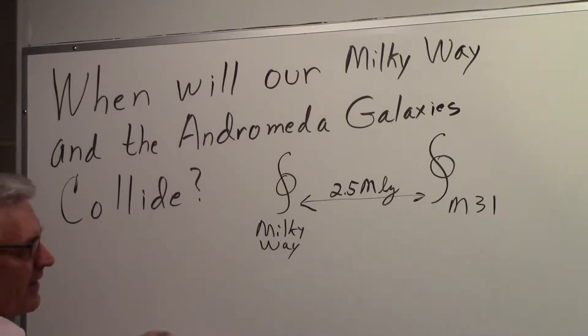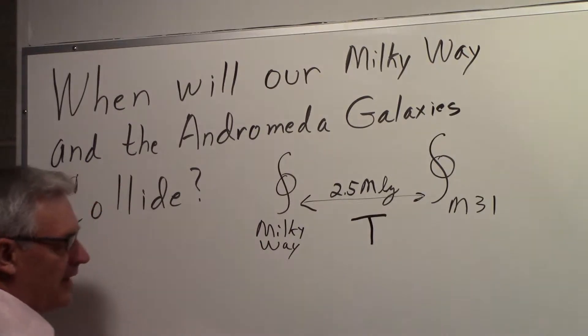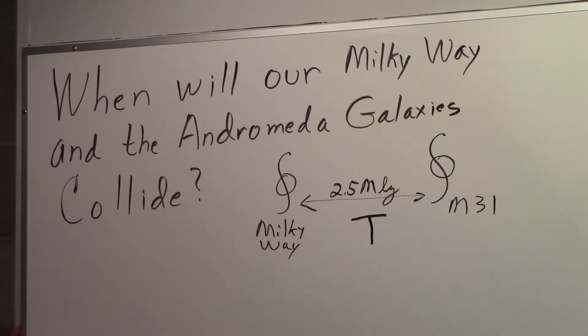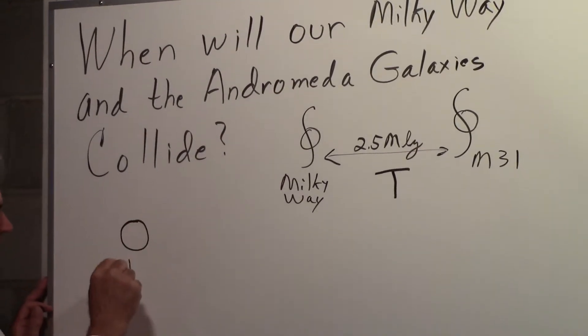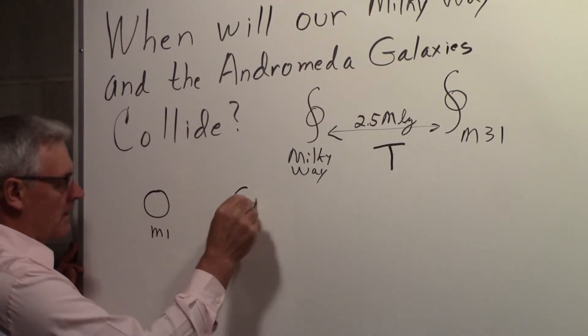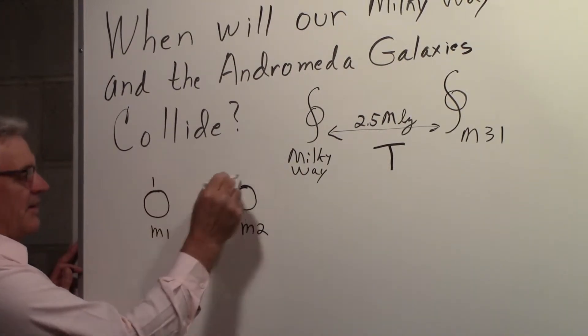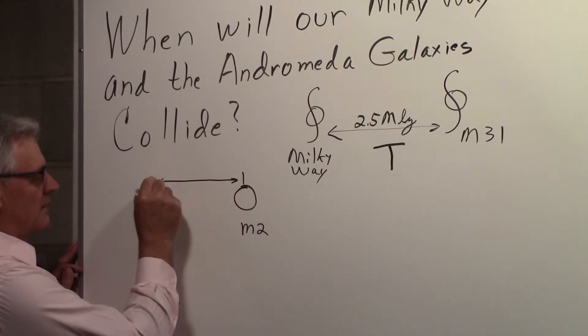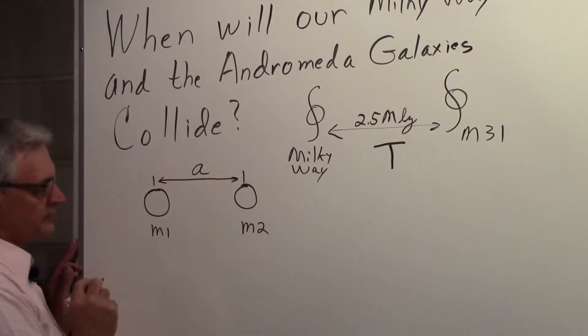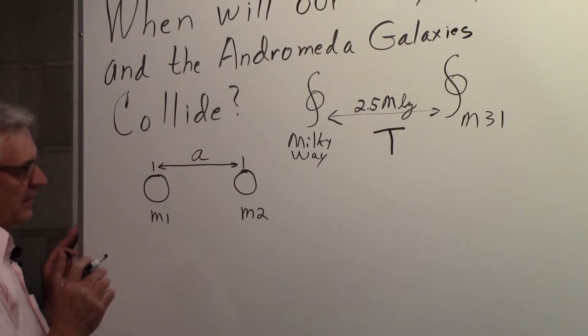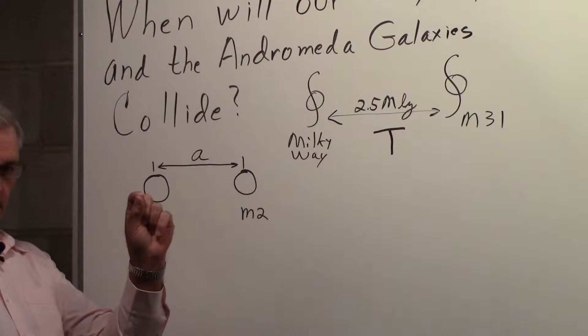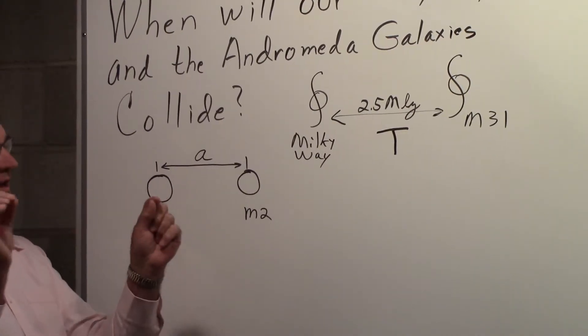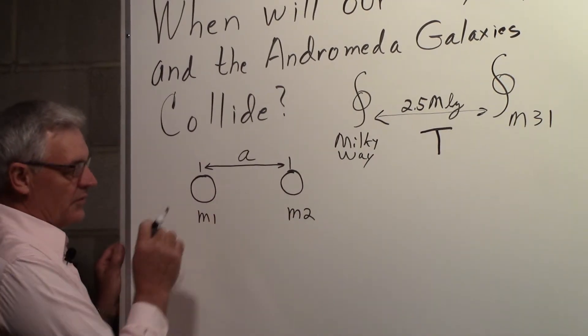We'll denote that time of collision by the letter capital T. To simplify this, we'll consider we have two masses M1 and M2, and they're separated by a distance that we'll call A. We want to find out that if we had these masses out in space away from other gravitational fields, and you imagine them being fixed and then released, how long will it take for them to collide?